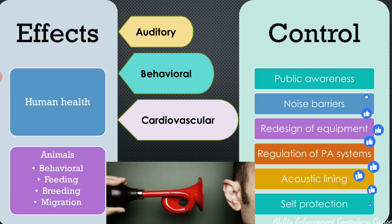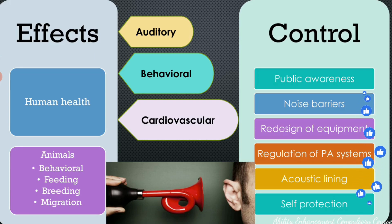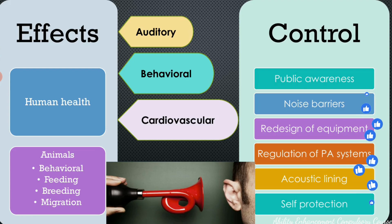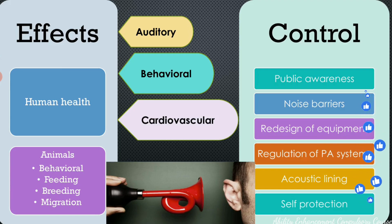Redesigning industrial equipment and using shock mounting assemblies in more equipment can ensure that noise levels are reduced. Regulation of PA systems, especially loudspeakers and microphones, can be controlled — you can't completely stop it but you can regulate the timing and the loudness. Acoustic lining — a sound-absorptive material — is now used in construction materials, pipes, ducts, and rooms to decrease the noise getting inside.